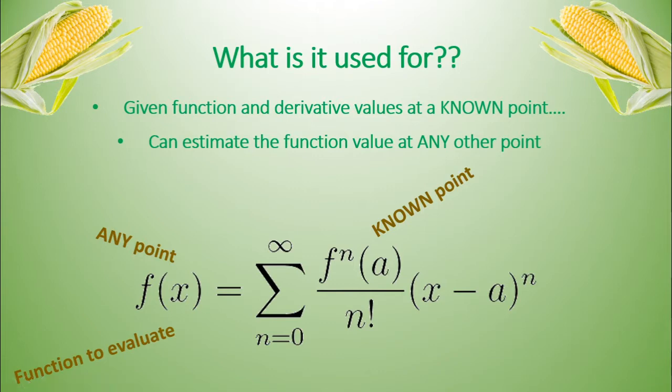So for the example I had mentioned before, the a would be 1, because we know the function value and all its derivatives, which is this n, which we'll come to in a sec. And we can find, let's say, the value at 1.5, which we'd put in for x.